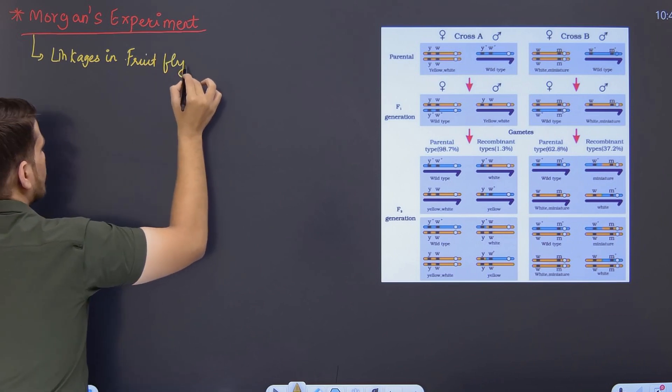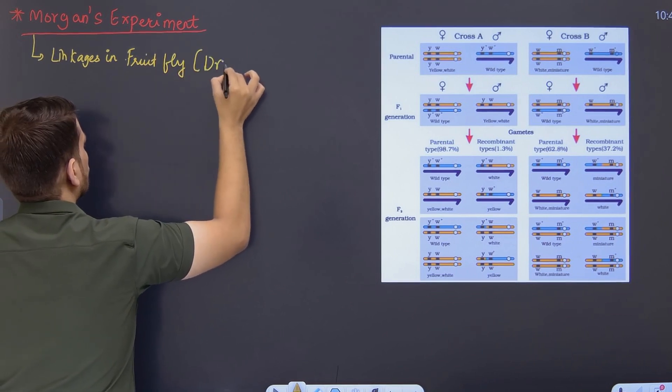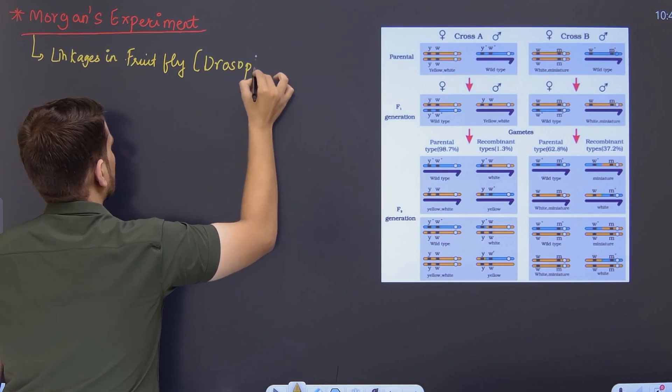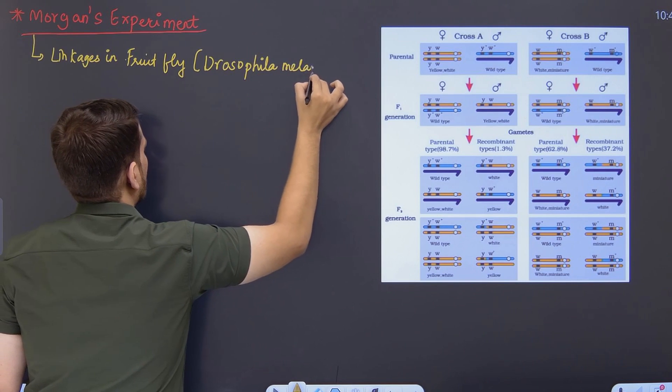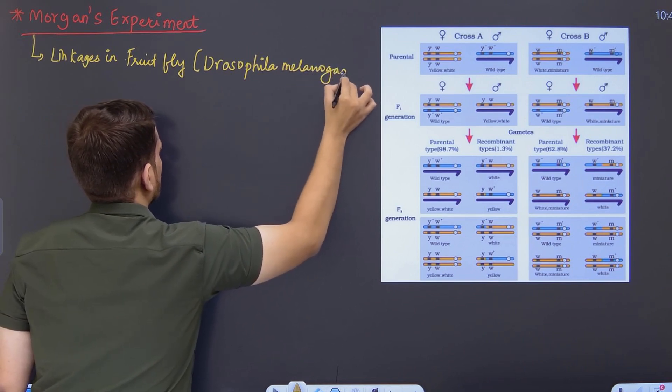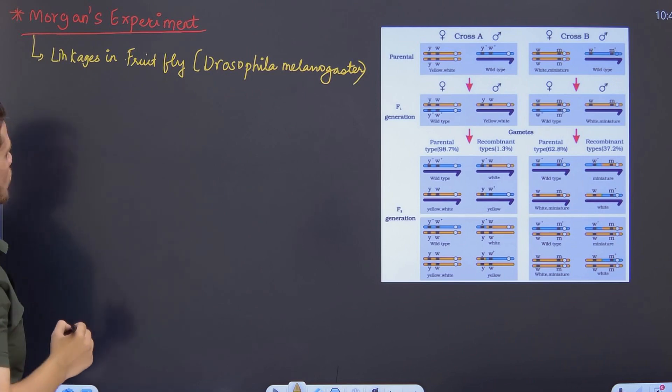And what was the scientific name? Fruit fly's scientific name was Drosophila melanogaster. So students, we talked about fruit fly.